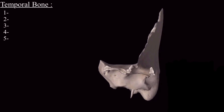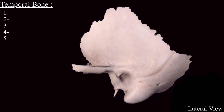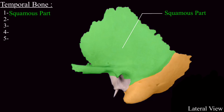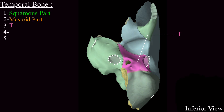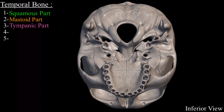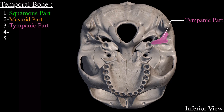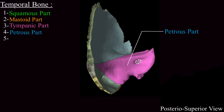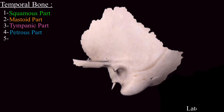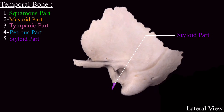Now we come to the five parts of the temporal bone, taking the left temporal bone as a representative. In the lateral view, the smooth and flat area is the squamous part; posterior to it is the mastoid part. In the inferior view is the tympanic part — a triangular plate structure. In the posterior superior view is the petrous part, and in the lateral view is the styloid part, also called the styloid process.